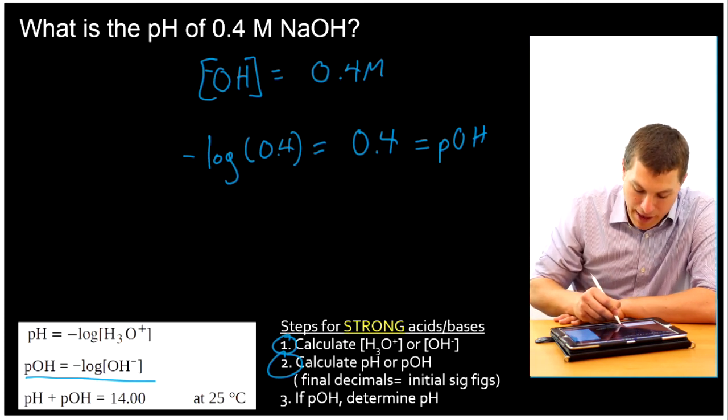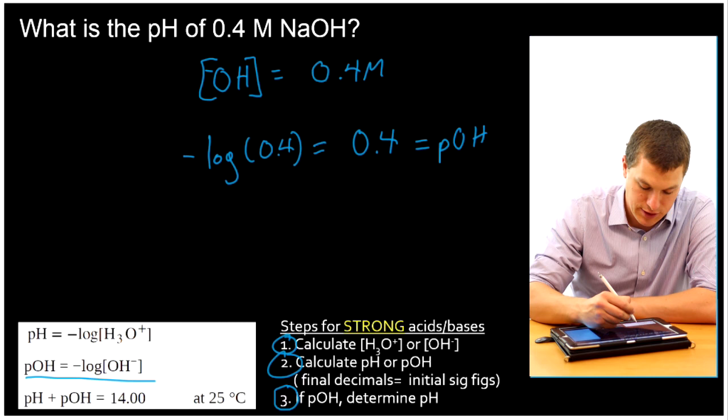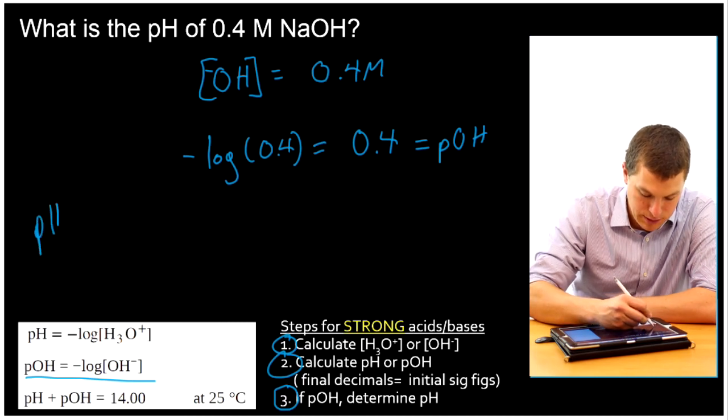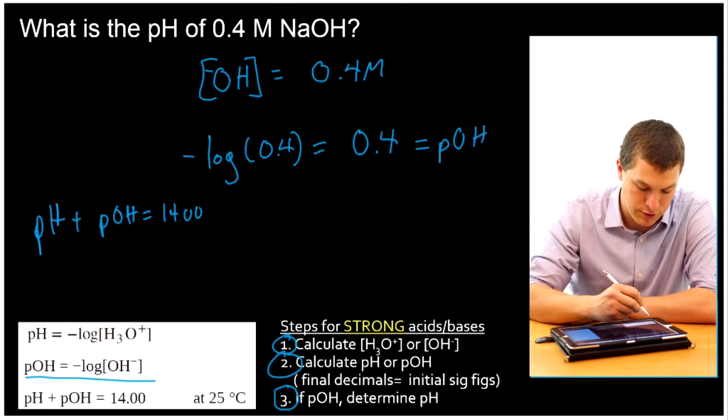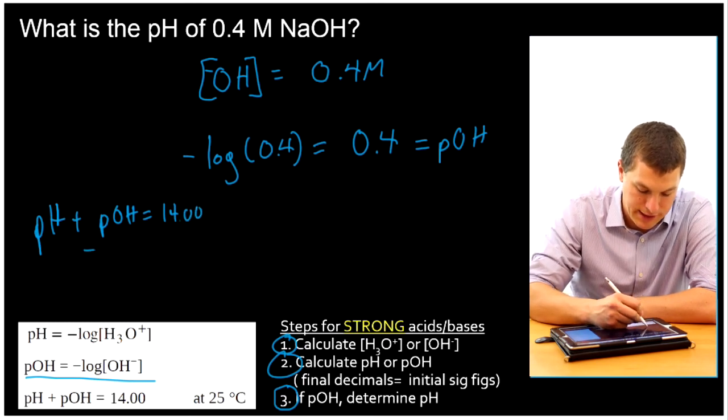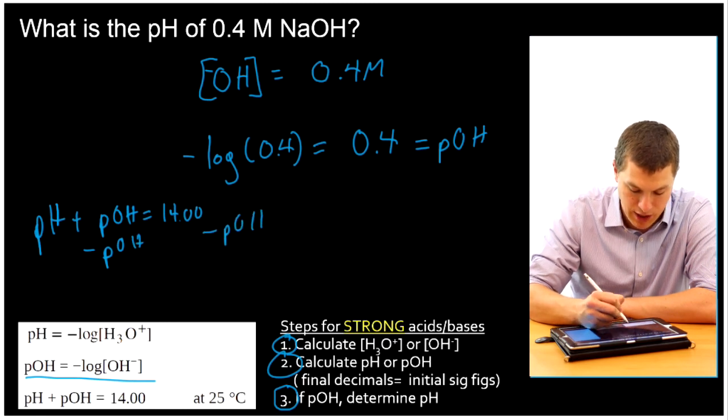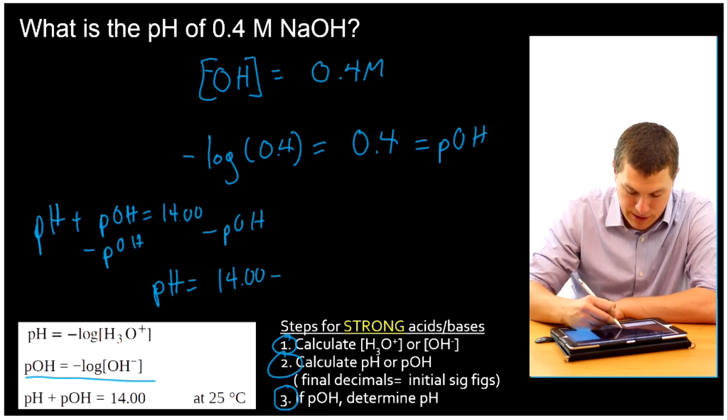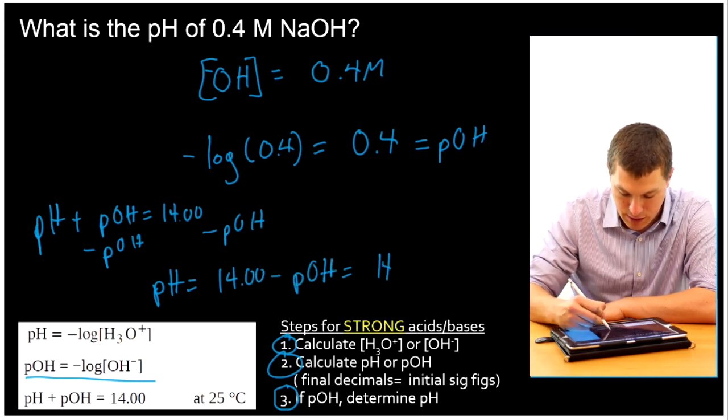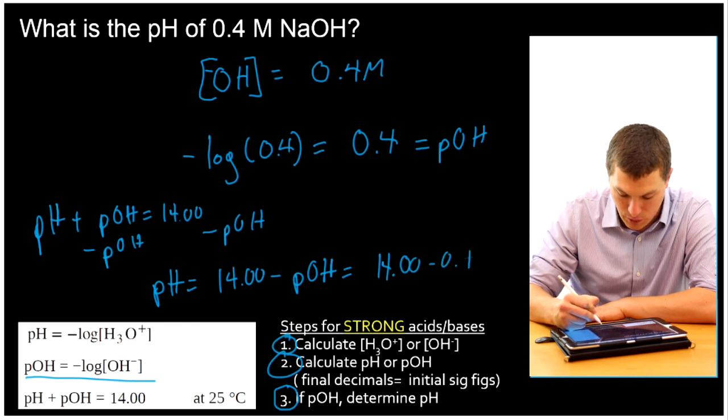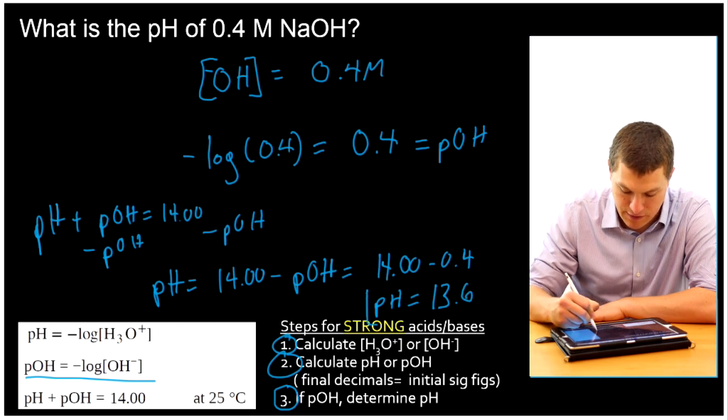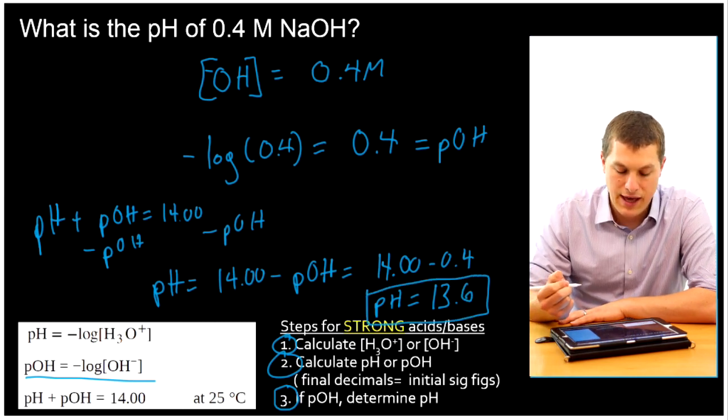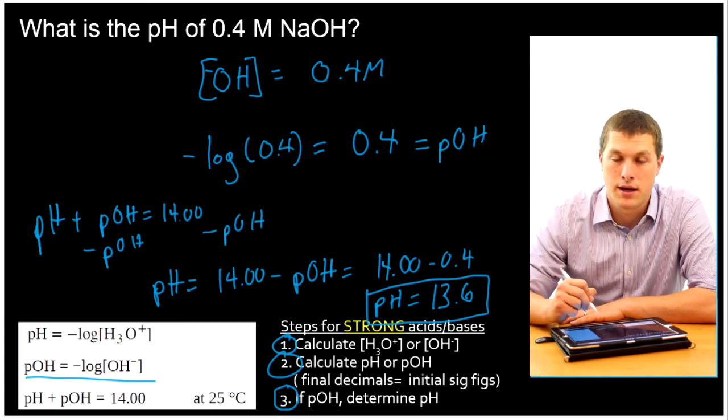Now I'm going to go ahead and use that equation to calculate pH. So I know that pH plus pOH is equal to 14. So if I subtract pOH from both sides, then what I get is that my pH is equal to 14 minus my pOH, which in this case is going to be 14 minus 0.4. And that gives me a pH of 13.6. So that is a base with just one hydroxide ion in it.